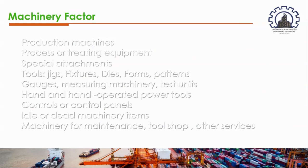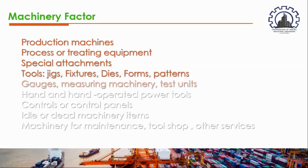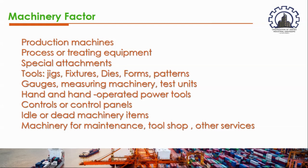Information about machinery including tools and equipment is fundamental to proper arrangement of that machinery. As a planner, you have to know the features of the machine that needs to be set up in a particular location. These features include production machines, process or treating machines, and special attachments such as jigs, fixtures, dies, forms, patterns, gauges, and measuring machinery.